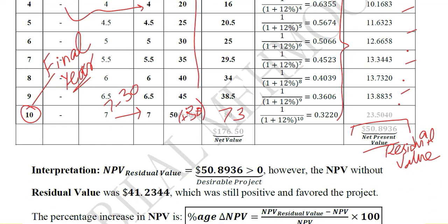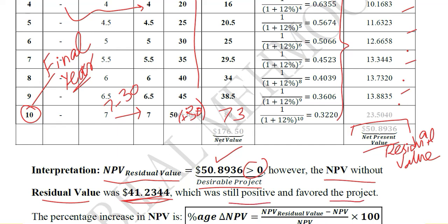Now let us try to interpret this result. The NPV with residual value is 50.8936, which is positive — this means it is a desirable project. The NPV without the residual value, which we calculated before, was $41.23, and it was still positive and favoring the project. There is a notable change in the NPV, and we should calculate the percentage change.